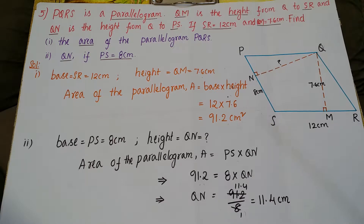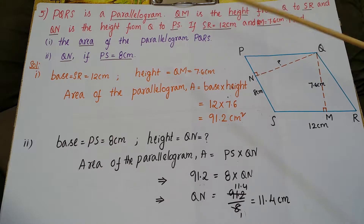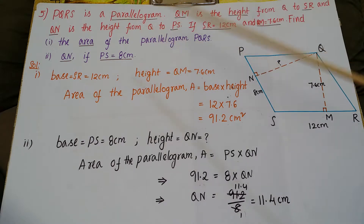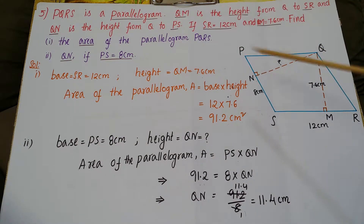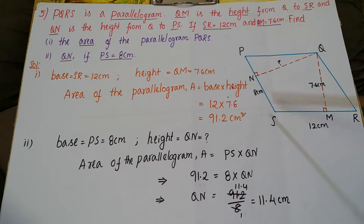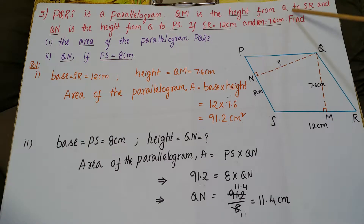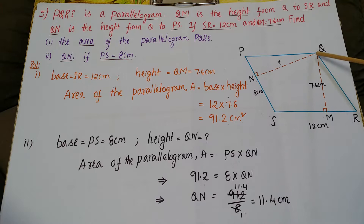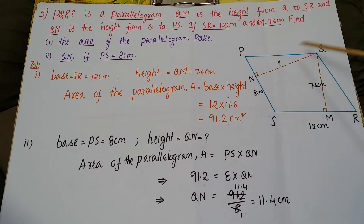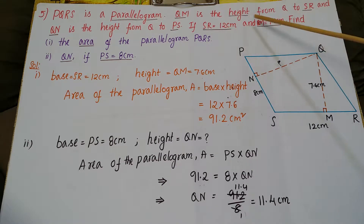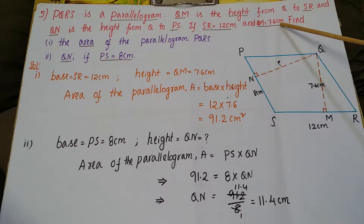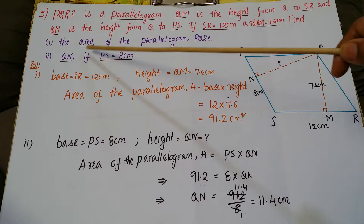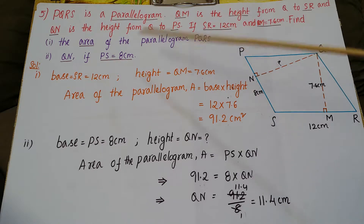This is the fifth problem from Exercise 10.2 from NCERT. PQRS is a parallelogram. QM is the height from Q to SR, and QN is the height from Q to PS. If SR is equal to 12 centimeters and QM is equal to 7.6 centimeters, find first the area of the parallelogram PQRS.